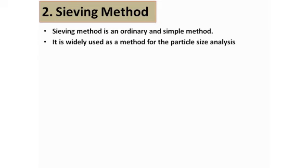The next method is the sieving method. Regarding the sieving method we have already studied in size separation. The sieving method is the most classical type of method which is actually employed to differentiate the particles based on their sizes. In this method we use the standard pharmacopoeial sieve. The sieving method is a very ordinary and simple method which is applied in the laboratory scale and it is widely used for the method of particle size analysis.